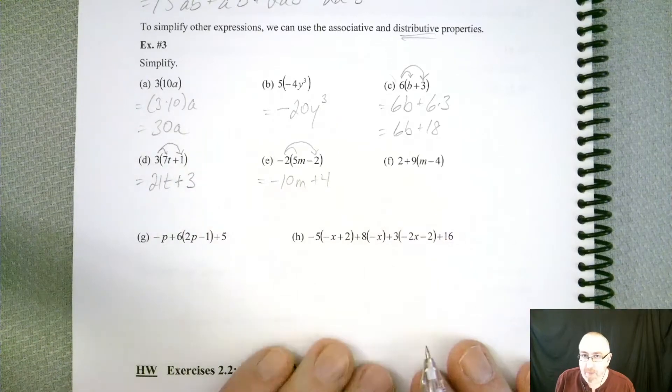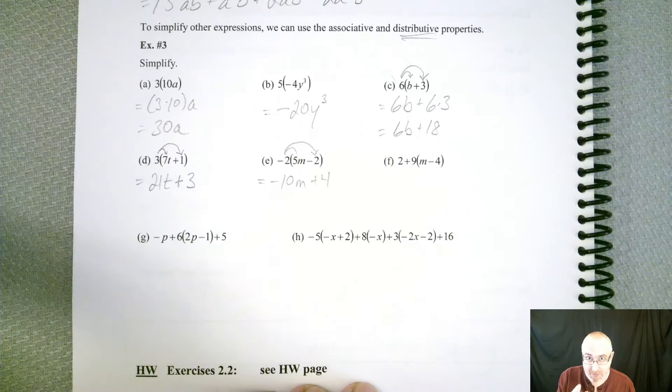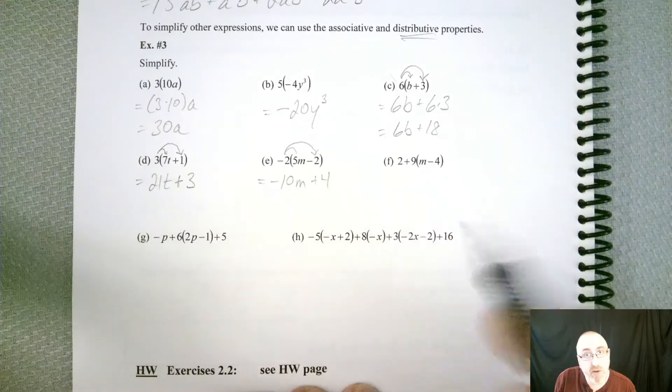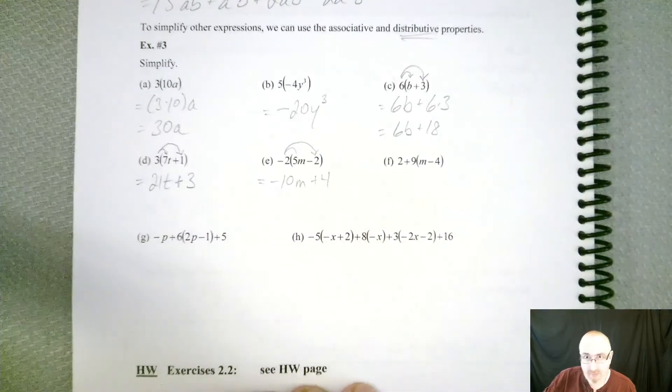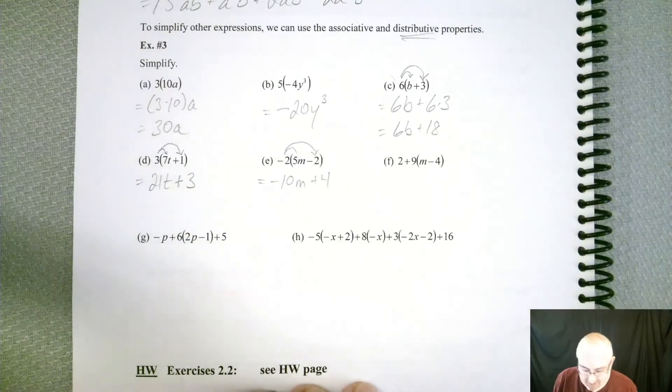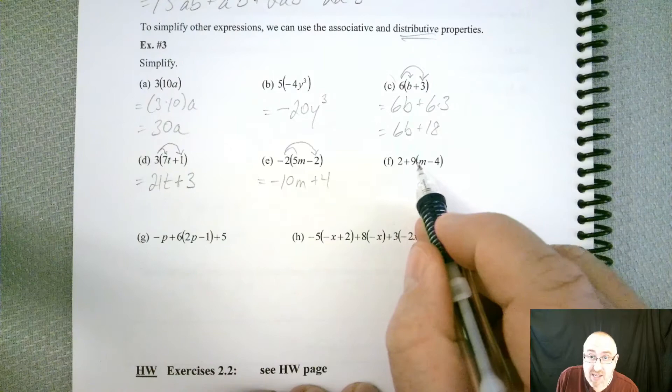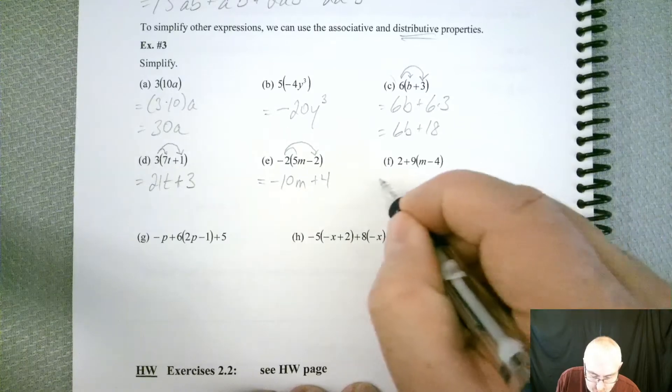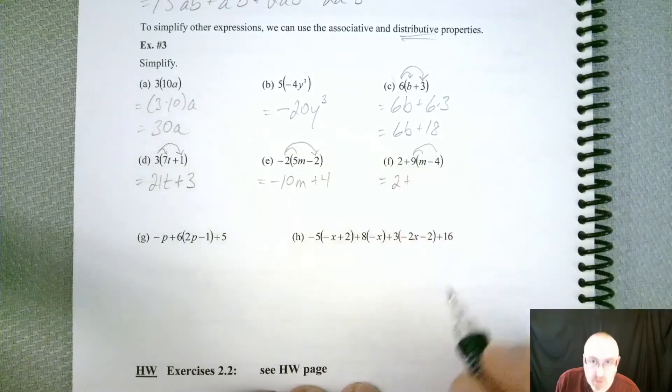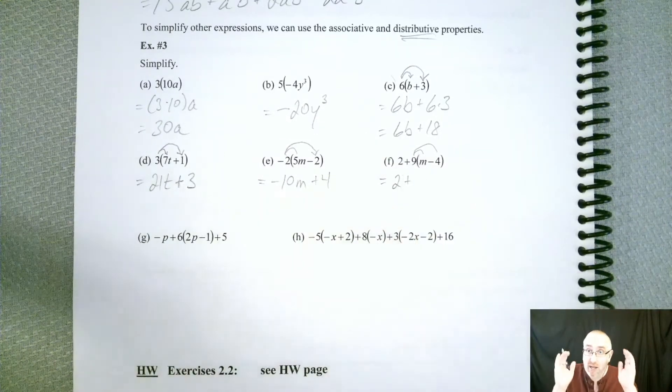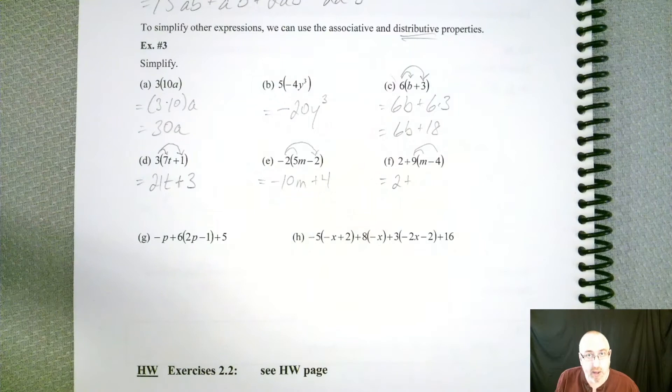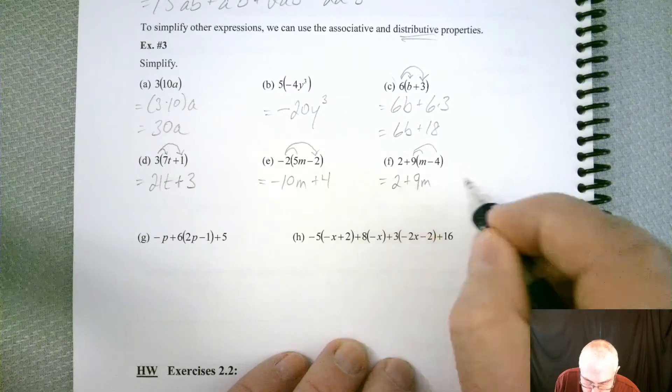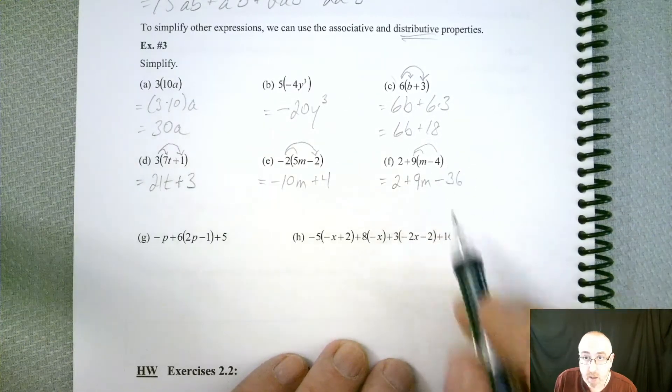All right, what about f? Now, you're looking at it, and I can tell what you're thinking right now. And I'm not even there, and I can tell what you're thinking. You're saying, ooh, 2 and 9 is 11, and then we can distribute, right? No. That's a big no. Because this 9 is attached by multiplication. So you can't add first. You have to multiply first. So that 2 is going to have to wait until you distribute this 9 in. So be careful. If the 2 plus 9 was in its own set of parentheses, then yes. Then you would add those together first. So be careful. Parentheses are important. So you should get a 9m minus 36.